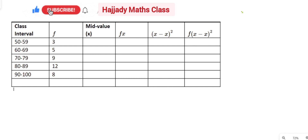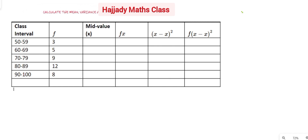Today we shall be working on episode 7 of our statistics for beginners. Today we are asked to calculate the mean, the variance, and the standard deviation for the grouped data.